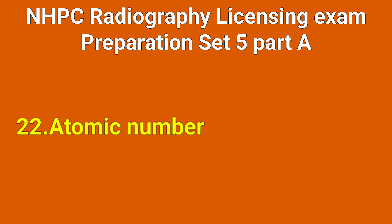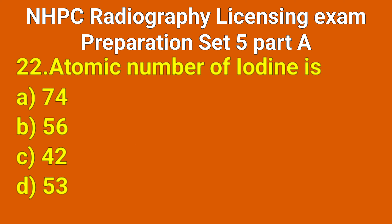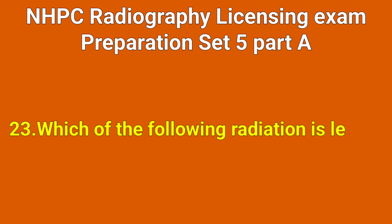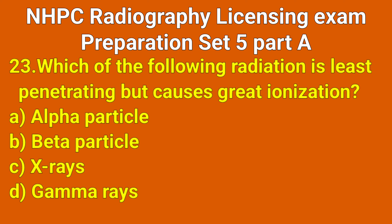Question number 22: The atomic number of iodine is which option? Correct answer: option D, 53.